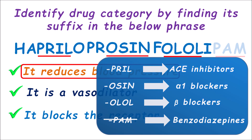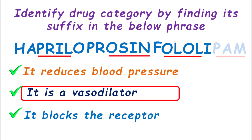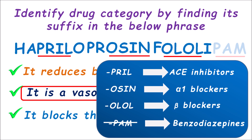To identify the right answer, let us go to the second clue: it is a vasodilator. Among the remaining three, PRILs or ACE inhibitors are vasodilators — they reduce angiotensin II synthesis, thereby preventing vasoconstriction. Alpha-1 blockers are direct vasodilators, inhibiting vasoconstriction by the adrenergic system. Beta blockers reduce blood pressure but are not vasodilators — they act on the heart to reduce both rate and force of contraction, reducing cardiac output along with afterload and preload. So -olol is not the right answer.